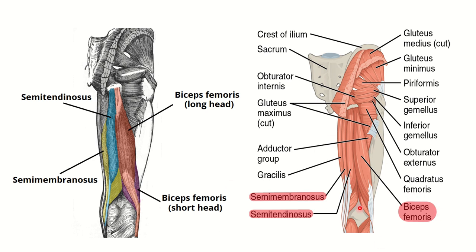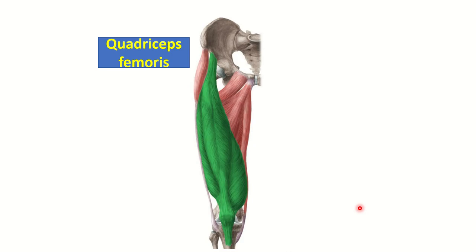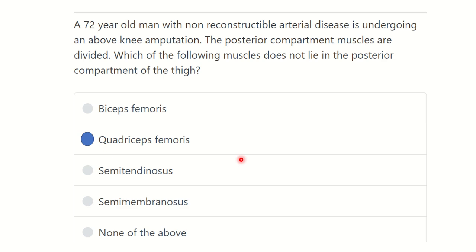These three important muscles are present in the posterior compartment of the thigh. Here we can see the anterior aspect of the thigh and the quadriceps muscle, which attaches to the hip bone and the tibial tuberosity. The quadriceps femoris is formed by four muscles: vastus medialis, vastus lateralis, vastus intermedius, and rectus femoris.